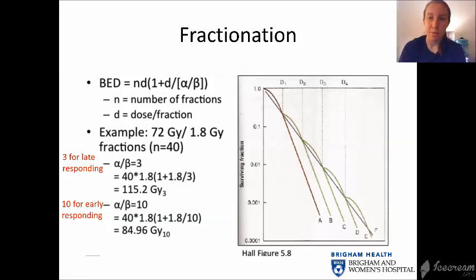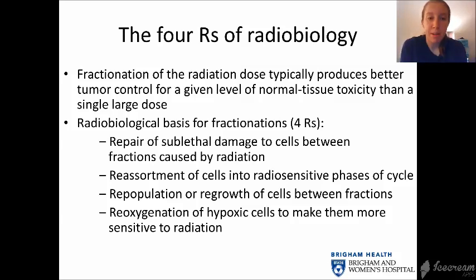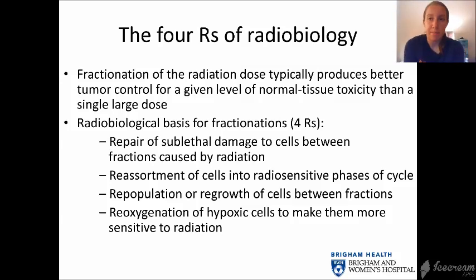The radiobiological basis for fractionation depends on the 4Rs: repair, reassortment, repopulation, and reoxygenation. Repair refers to repair of sublethal damage to cells between fractions caused by radiation — for both tumor and normal tissue. Reassortment refers to cells moving into radiosensitive phases of the cell cycle between fractions. Repopulation refers to regrowth of cells between fractions, more useful for normal tissue. Reoxygenation refers to the reoxygenation of hypoxic cells to make them more sensitive to radiation, which is more relevant for tumor cells.